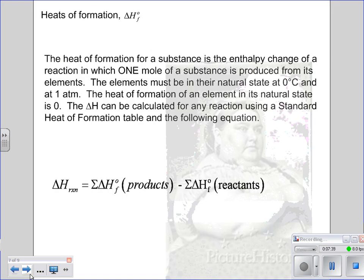Heats of formation. So the heat of formation for a substance is the enthalpy change of a reaction in which one mole, I'm going to come back to that, one mole of a substance is produced from its elements. The elements must be in their natural state. And we're talking about at 0 degrees Celsius in one atmosphere. The heat of formation of an element in its natural state is 0. So you'll see that. You have some data tables that you'll look at for that. And delta H can be calculated for any reaction using a standard heat of formation table. That's what I'm referring to. And the following equation.